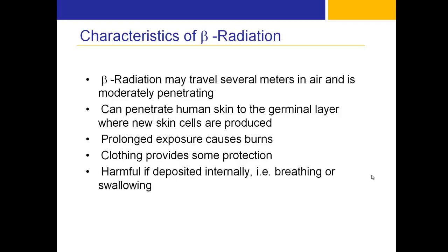Beta radiation may travel several meters in air and is moderately penetrating — somewhat further than alpha radiation. It can penetrate human skin to the germinal layer where new skin cells are produced, and prolonged exposure can cause burns. Clothing still provides some protection, but beta is more penetrating than alpha and is harmful if deposited internally through breathing or swallowing.